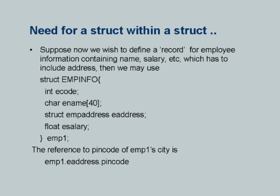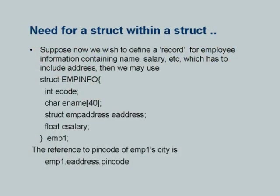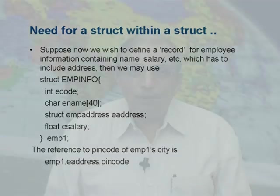The entire E_address structure is referred to as emp1.E_address. If I want the city or pin code of the employee, I write emp1.E_address.pin_code. This is a very neat way of organizing complex pieces of data in an organized fashion as a structure or record. In a data structures course, the typical structures discussed are stacks, queues, linked lists, and graphs — important for specific applications like sorting and searching.